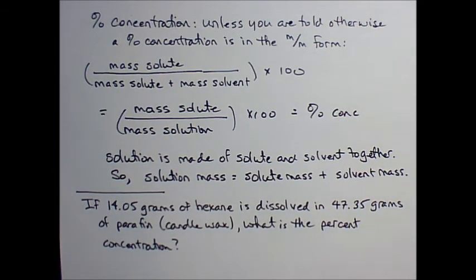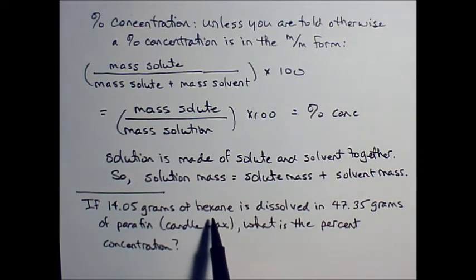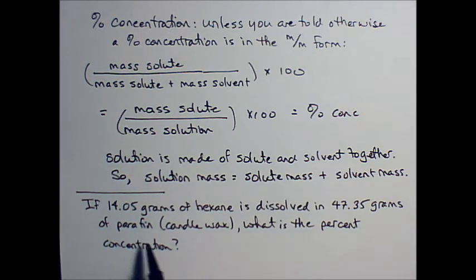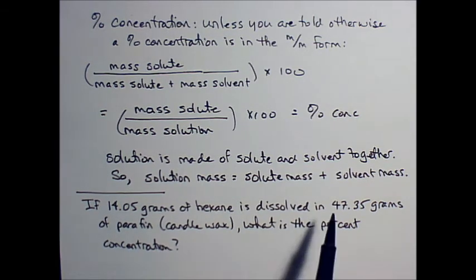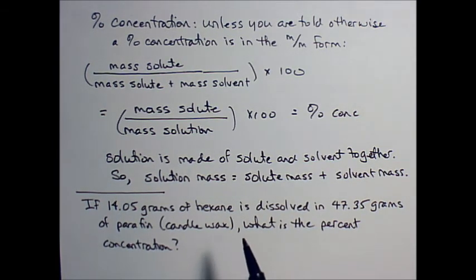We need to identify the solute here and the solvent. What is the solute in this problem? The hexane is the solute because it's the thing that is being dissolved, and the solvent is paraffin or the candle wax. And so, you've identified those two. You've got the two amounts. You basically just plug it in.